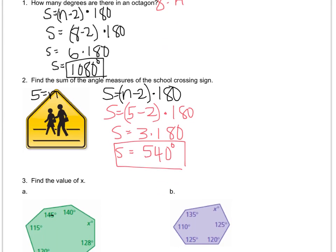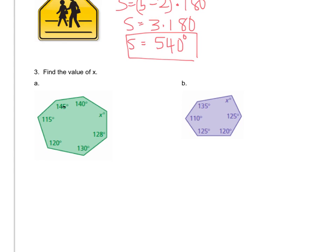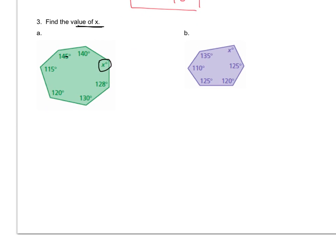For all you smarties out there — when you don't read the question, you might potentially get it wrong. In this question, they want the value of X; they're not asking for the total number of degrees. They want the measurement of this specific angle. To find X, first you have to figure out how much the angles are supposed to add up to, and then you'll figure out how many degrees you are missing.